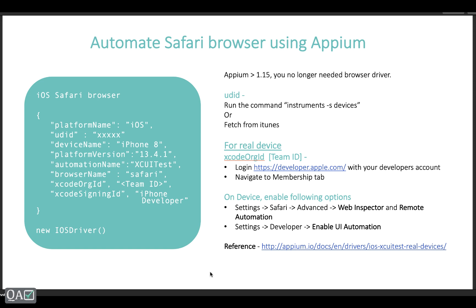On your iOS device you need to do two settings. Go to Settings > Safari > Advanced and enable two options: Web Inspector and Remote Automation. Also, Settings > Developer > Enable UI Automation — though in some devices with the latest version this option may not appear. These settings apply to both real devices and simulators. I'll share the reference link in the description below.